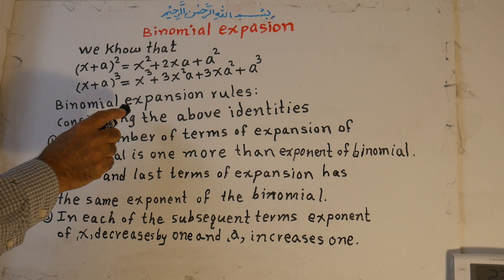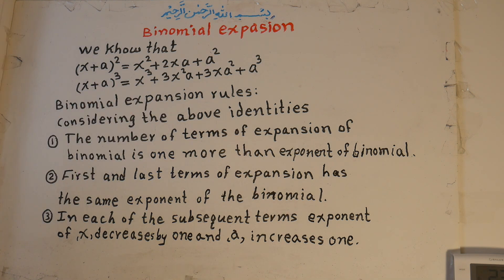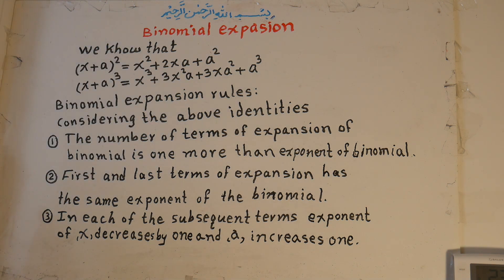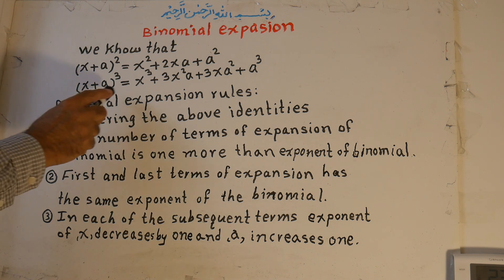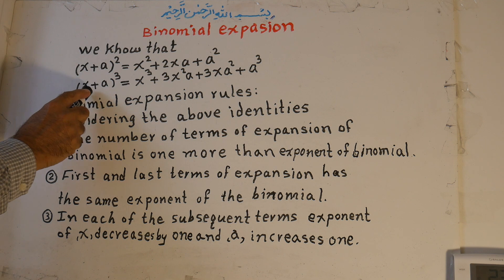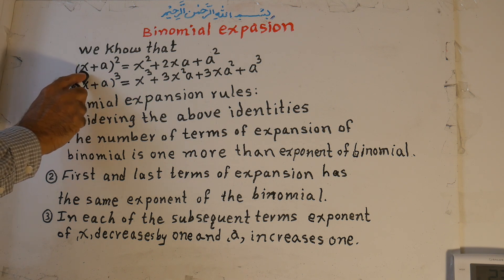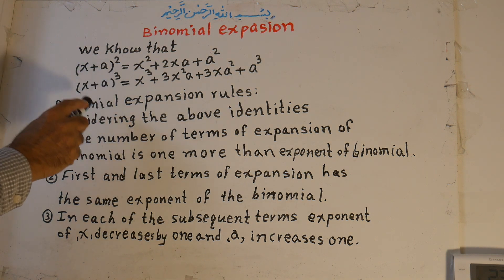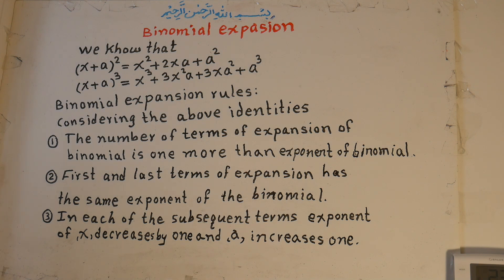Binomial has some rules. Considering the above identities, there are some rules for binomial. If you follow the rules, we can easily write the formula for the expansion of the binomial without multiplying them. Otherwise, multiplying x plus a by x plus a takes a long time, and if the power is 3, 4, or 5, it becomes more complicated.